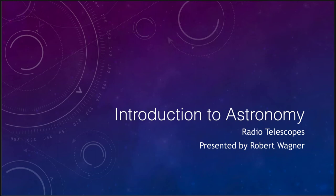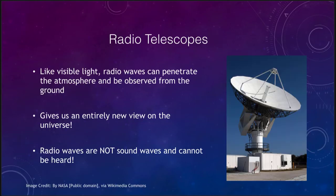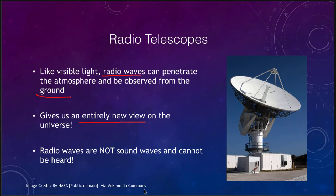What is a radio telescope? Radio waves penetrate the atmosphere and we can observe them from the ground, so radio telescopes can be based on the ground just like optical telescopes. They give us an entirely new view on the universe — a completely different wavelength of light, with very long wavelengths compared to optical light and very low energy photons.